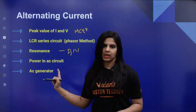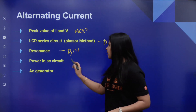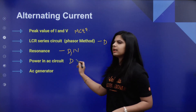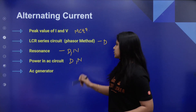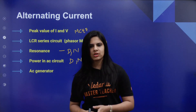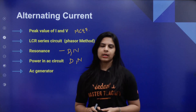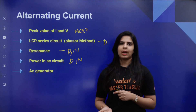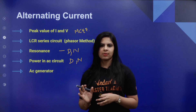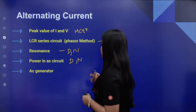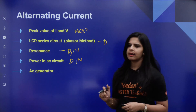Power in AC circuit — we expect derivations and numericals. AC generator is important — we expect numericals and derivations. These are the important topics in Alternating Current.